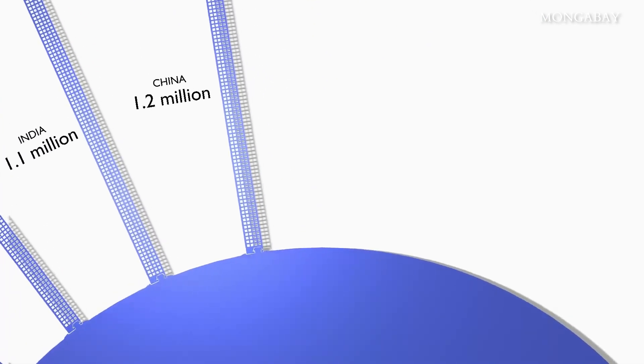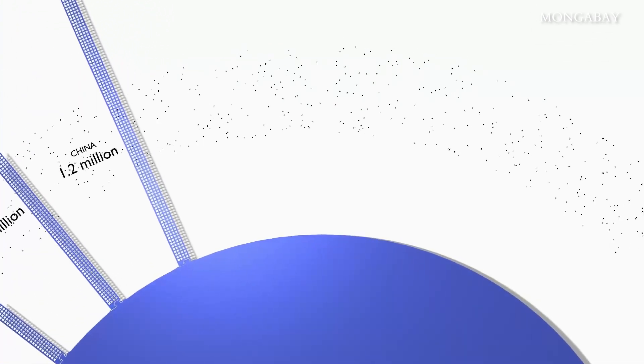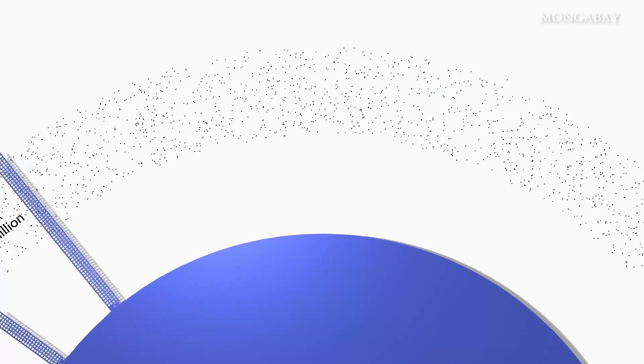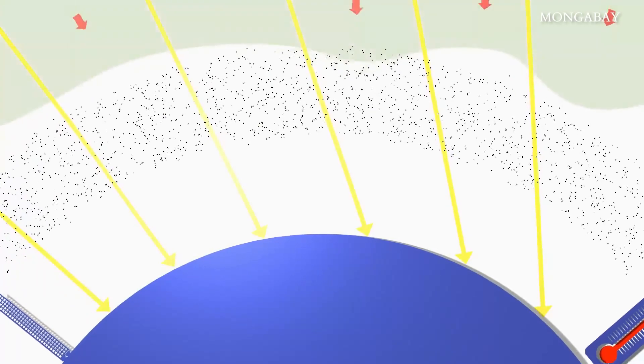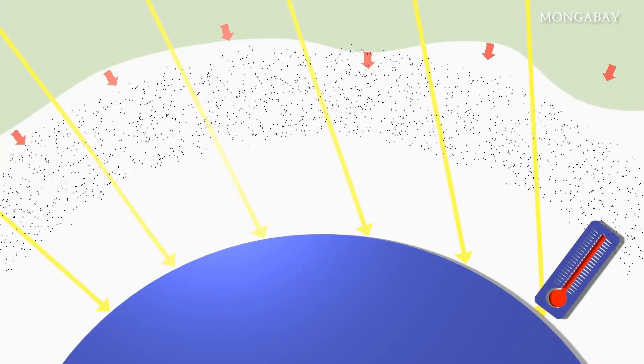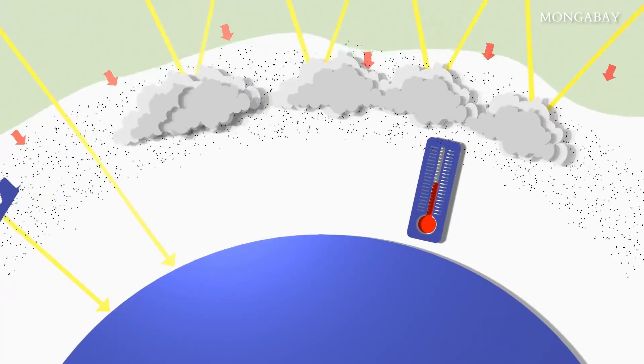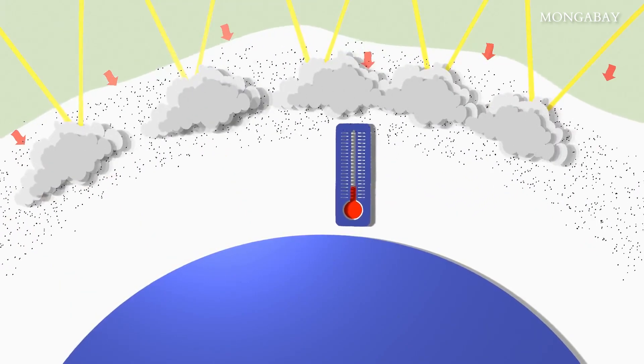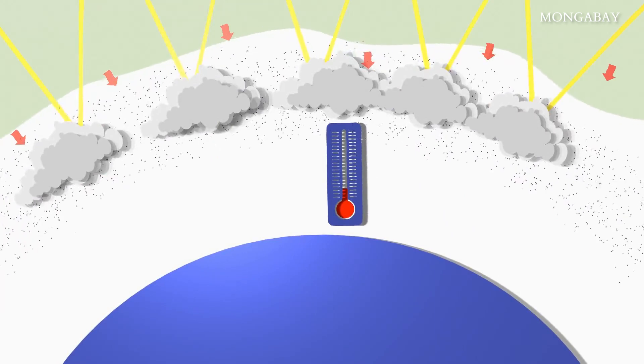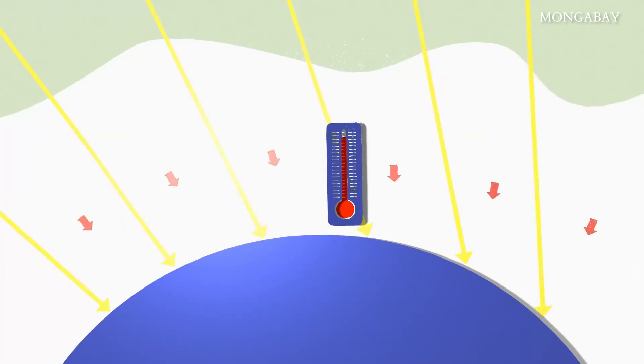But reducing them too fast is also a problem. That's because the cooling effect of aerosols offsets or masks some of the warming caused by greenhouse gases. In fact, seeding clouds with aerosol particles has been proposed as a way to combat global warming. Meanwhile, some scientists warn that eliminating sulfate emissions could double global warming over the next 25 years.